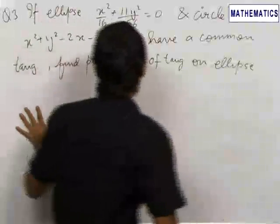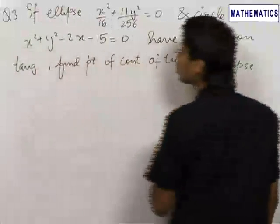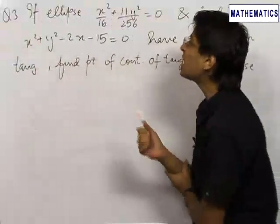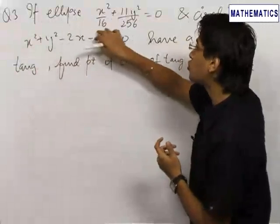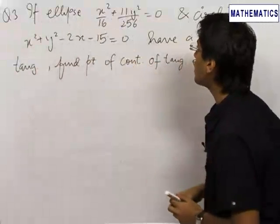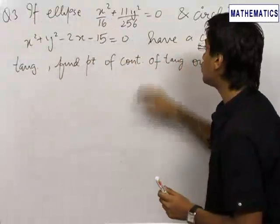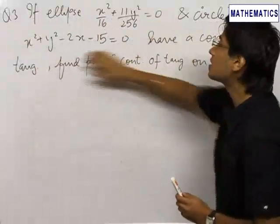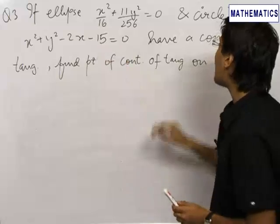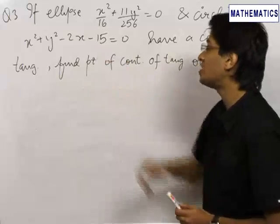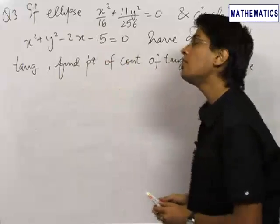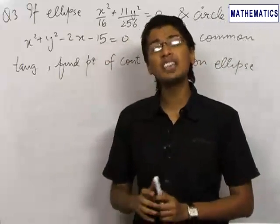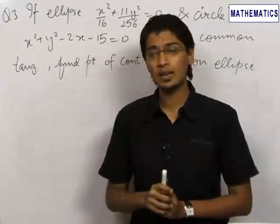Our next problem is a very good combination of a circle and an ellipse. We are given that the ellipse x²/16 + 11y²/256 = 0 and the circle are having a common tangent. We need to find the point of contact of the tangent with the ellipse.